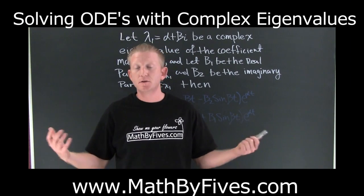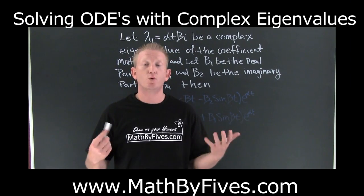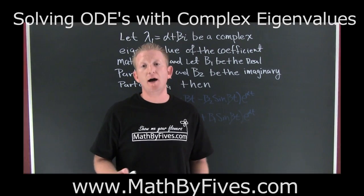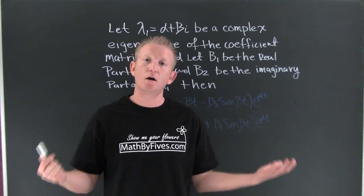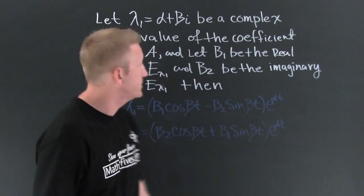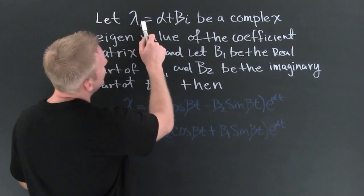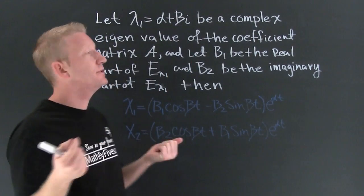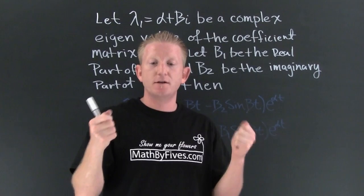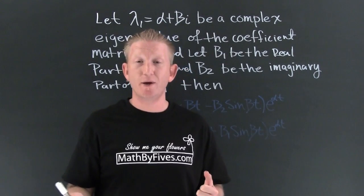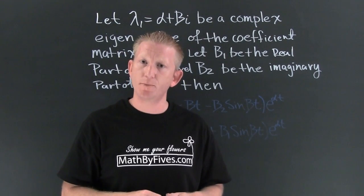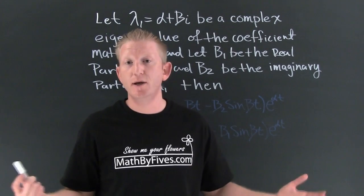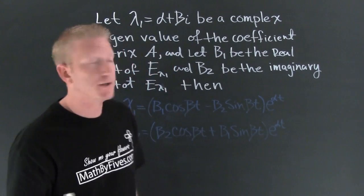Now we're talking about finding solutions to a system of ordinary differential equations with constant coefficients whose eigenvalues are complex. I need to remind you that if a solution to a characteristic equation or any polynomial is complex, then its complex conjugate is also a solution to that equation — so two for one on this one.